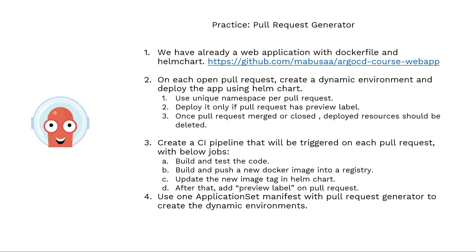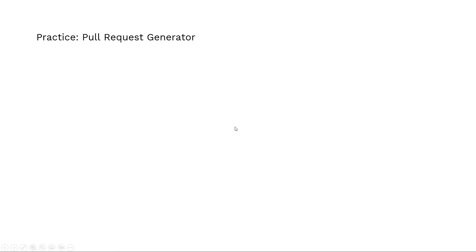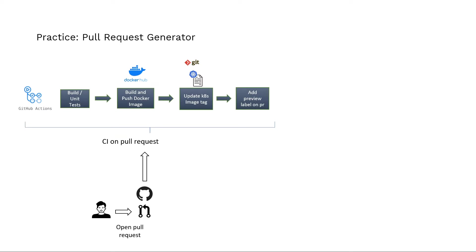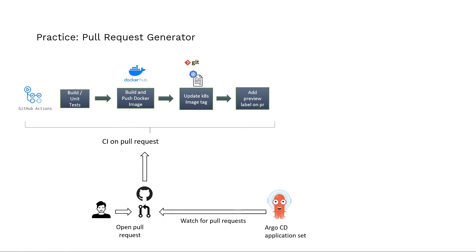To summarize the requirements using a diagram: a person will open a pull request, then a CI will be triggered on the pull request and do the build and test of the code, building and pushing a new Docker image, updating the Helm chart with the new image tag, and adding a preview label on the PR. The Argo CD ApplicationSet controller should be watching our repository's pull requests, so it will generate an application and deploy the manifest into the Kubernetes cluster.